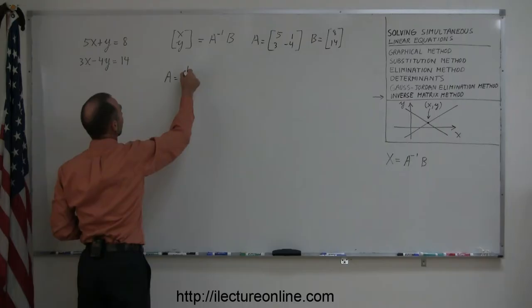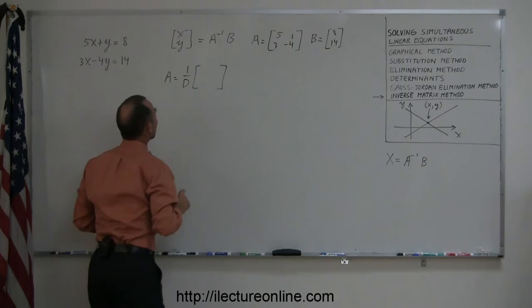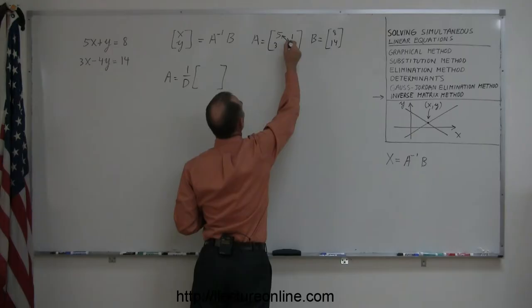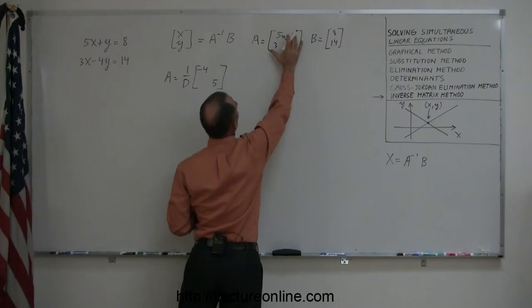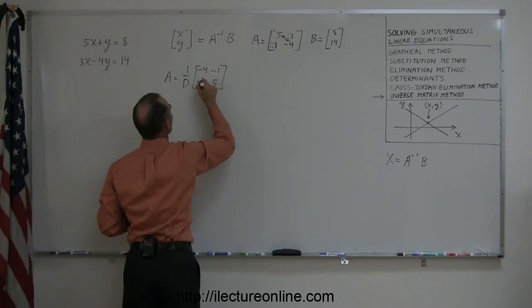It's equal to 1 over the determinant of A times the matrix of A with those two elements reversed. So putting the negative 4 over here and the 5 down here, and by changing the sign of the 1 and the 3, so this becomes a minus 1 and a minus 3.